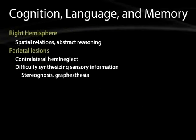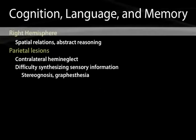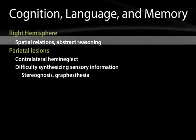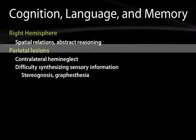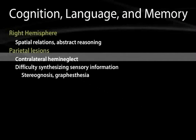Moving to the right hemisphere: the right hemisphere primarily subserves spatial relations and abstract reasoning — the kind of thinking architects need, or the ability to do mental rotation like in Tetris. Parietal lesions cause an interesting syndrome called hemi-neglect, and a right parietal lesion is the classical cause of contralateral hemi-neglect.